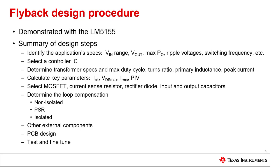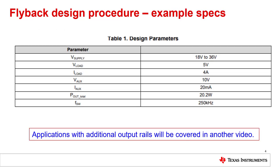Based on these specifications the converter can be designed, starting with controller selection and transformer calculation, which we will cover in this video. The other steps will be shown in a further video. The design procedure may be an iterative process until all specifications can be fulfilled, or some are relaxed due to cost reasons. For this video series, we plan to design a converter with 5 volts and 20 watts at the output from a nominal input voltage of 24 volts. To reduce the power dissipation in the controller IC, an auxiliary voltage source of 10 volts shall be used, delivering about 20 milliamps. The switching frequency is selected to be 250 kilohertz.